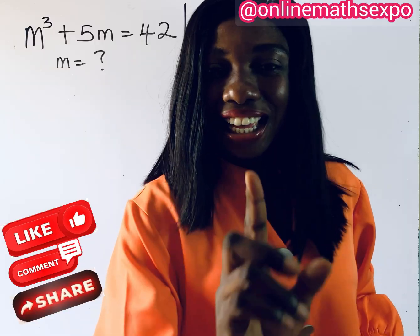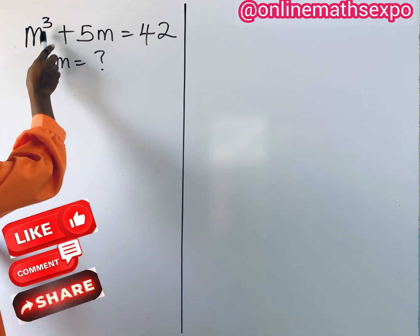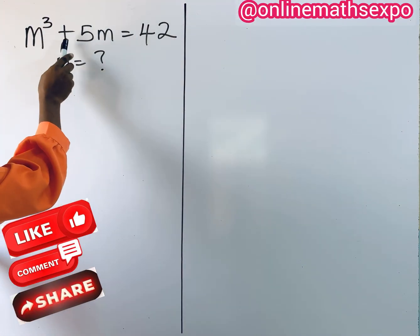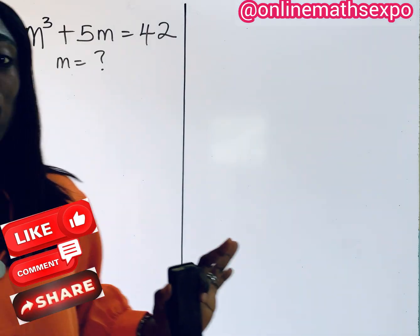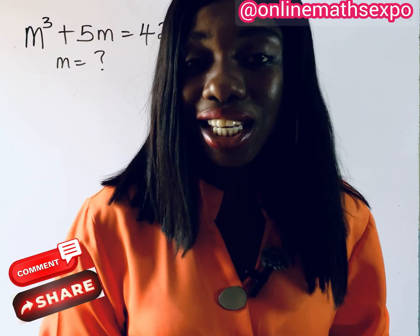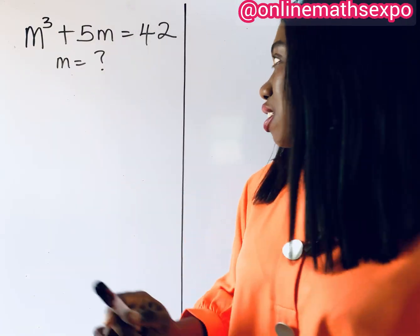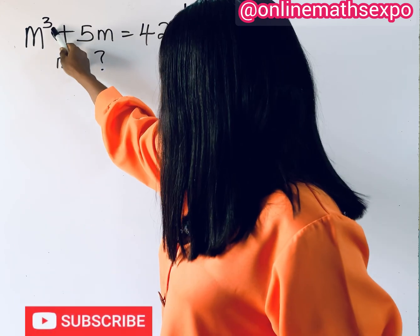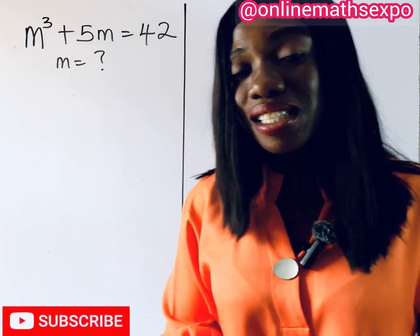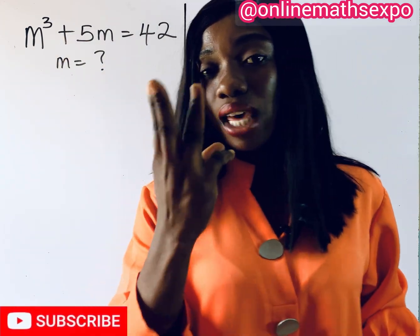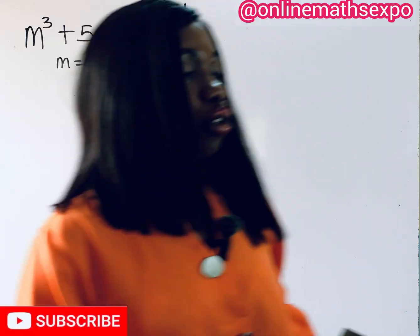Let's do this together. When you look at this, you are given m³ plus 5m equal to 42. This is what we call a cubic equation. It is cubic because the highest power of m is 3, which means we have to find three values of m.